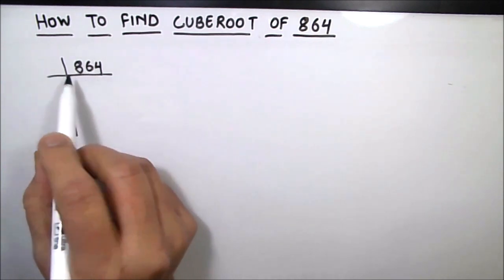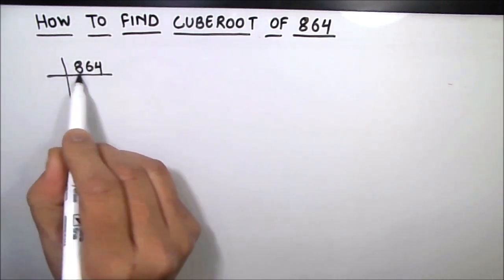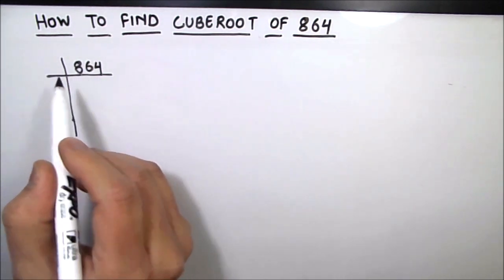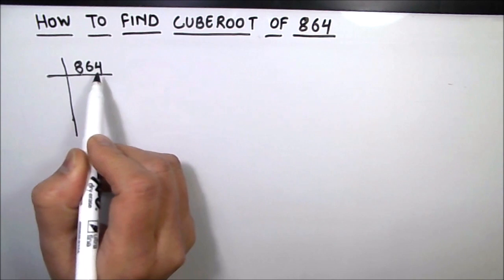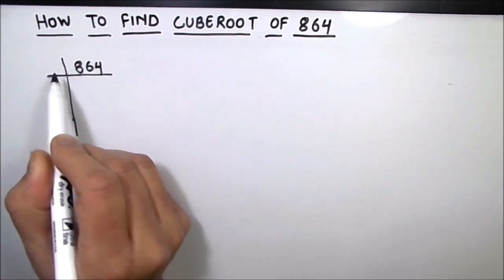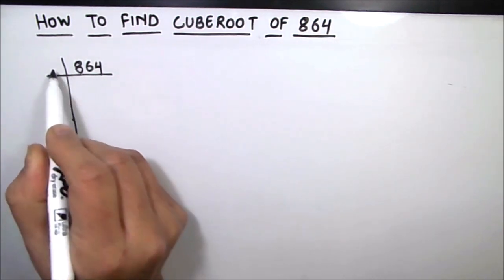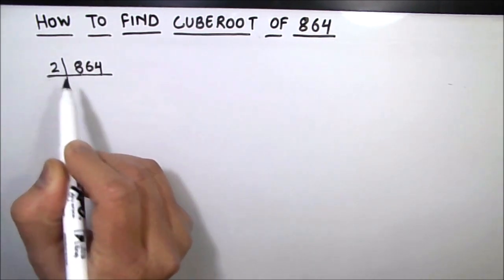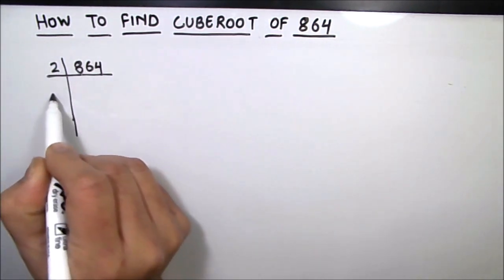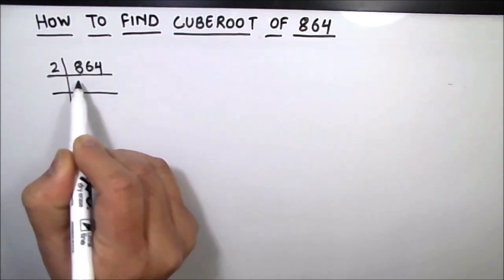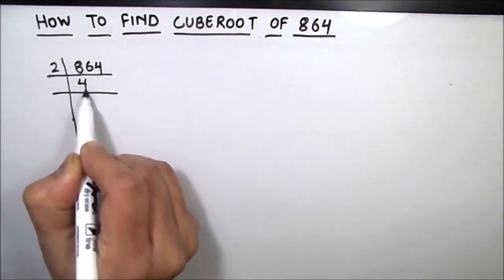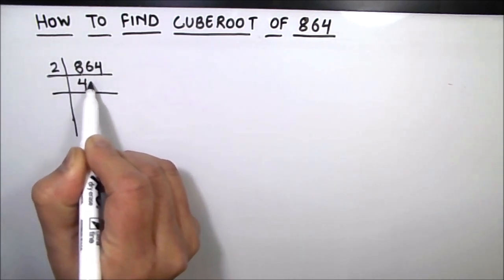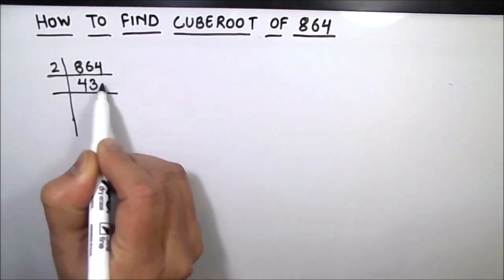In this prime factorization method we are going to write the number and divide it by prime numbers. As 864 is an even number, we are going to divide it by the first prime number, which is 2.